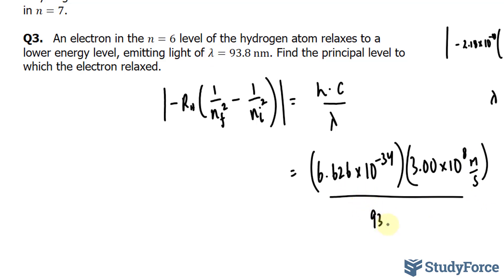So I'll write down 93.8 nanometers times, and for every 10 to the power of 9 nanometers, we'll have 1 meter. So we'll do this conversion as we're multiplying everything.